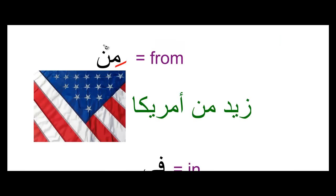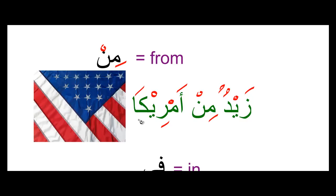Then we have the harf min, which means 'from.' The example is zaydun min amerika — Zayd is from America. You might wonder why Amerika has a fatha instead of two kasras. Amerika is an exception: it is a foreign word, and foreign words transliterated directly into Arabic cannot take a kasra. So we leave it with an alif and say zaydun min amerika.